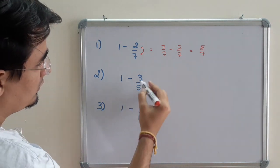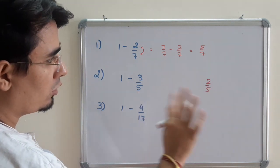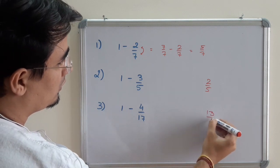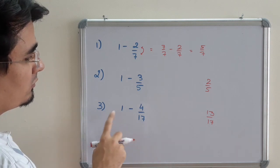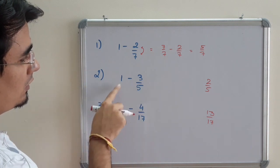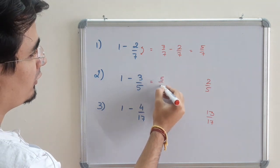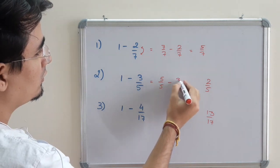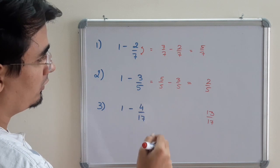I will do it 2 ways. So the answer would be 2 by 5. I know already the answer will be 13 by 17. I know it within 1 second because I am subtracting with 1. So let us see. 1 is a whole, so I will be writing it as 5 by 5 minus 3 by 5. So 5 minus 3 is 2 by 5.